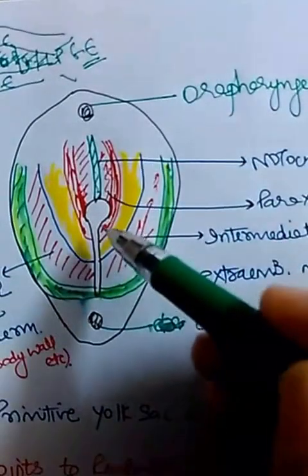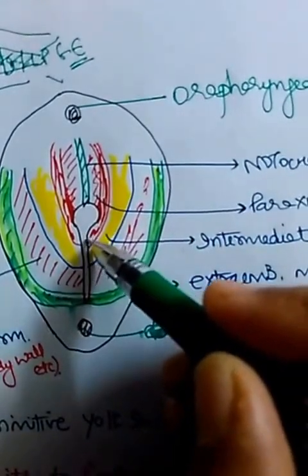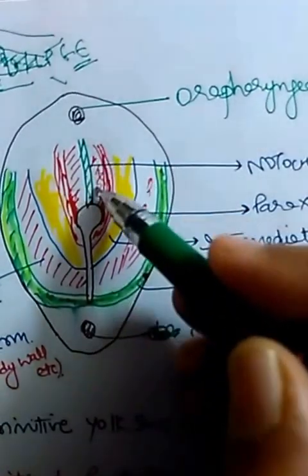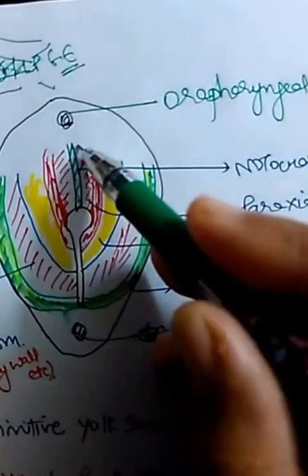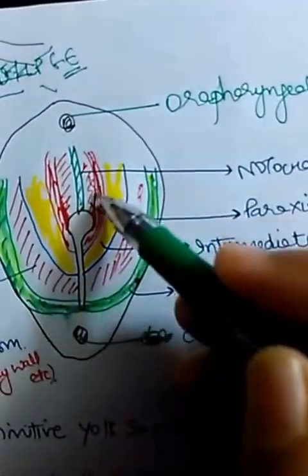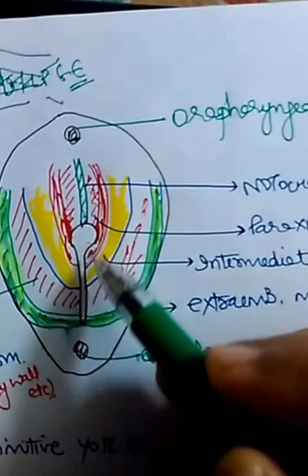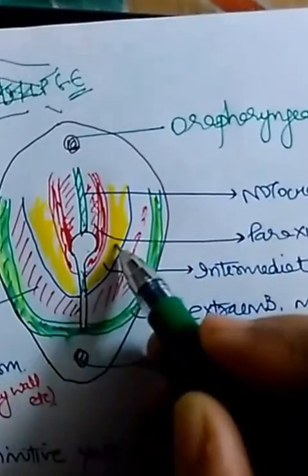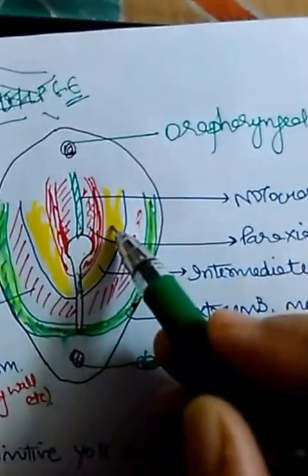This is the trilaminar germ disc with the primitive streak; in front of that is the notochord. The cranial part of the primitive streak and some nodal cells form the mesoderm that invaginates. When mesoderm goes cranially on both sides of the notochord, it forms paraxial mesoderm — the medial-most, just adjacent to the notochord. Cells a little more caudal to that invaginate to form intermediate mesoderm.